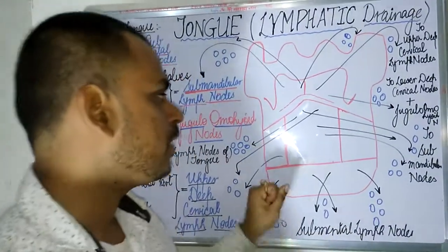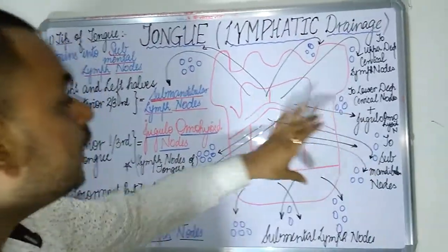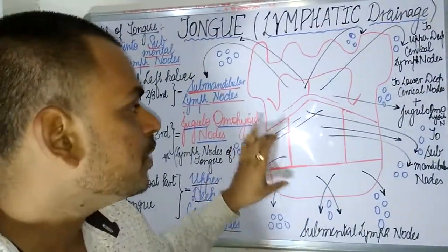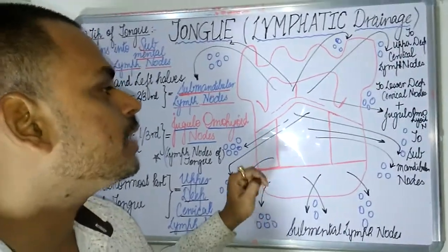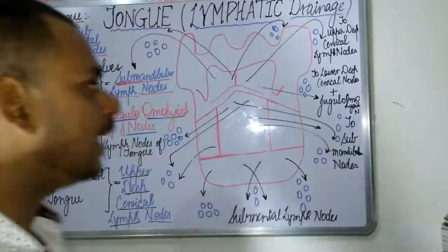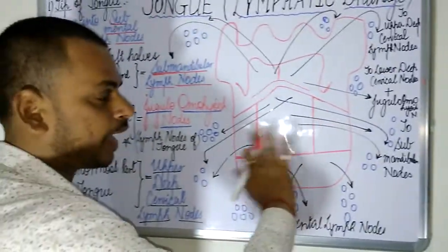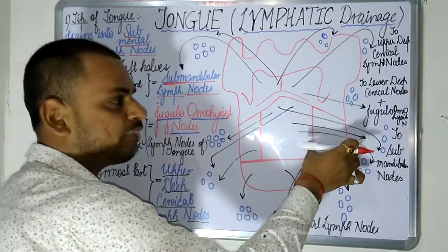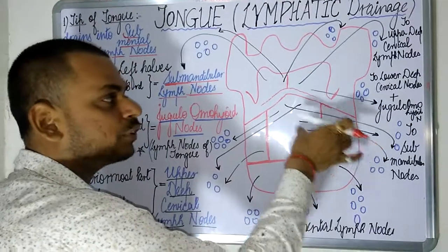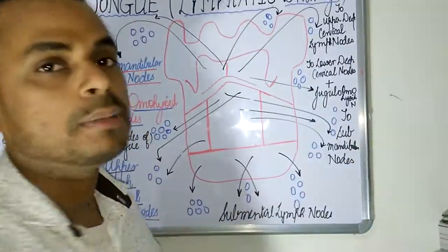Moving on to the anterior two-thirds of the tongue — this region can be divided into right and left halves. The right and left halves of the anterior two-thirds of the tongue drain into the submandibular lymph nodes.